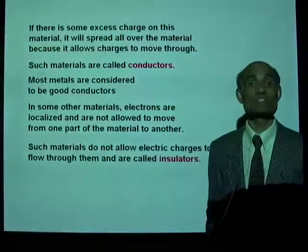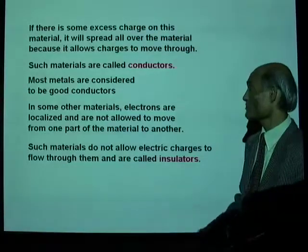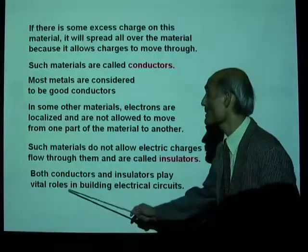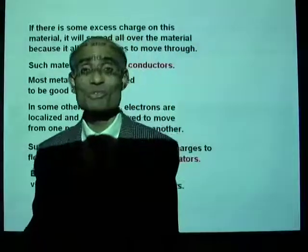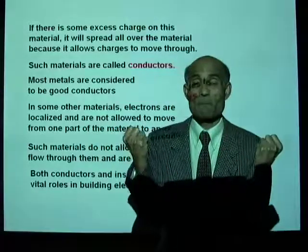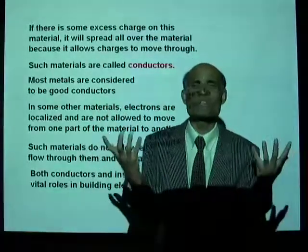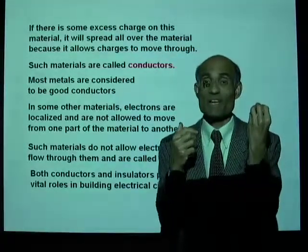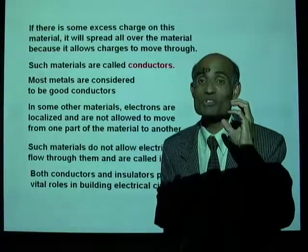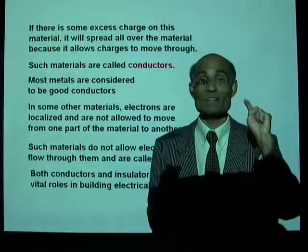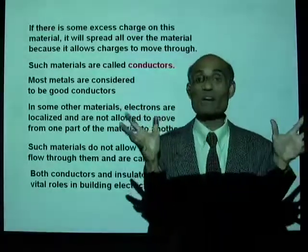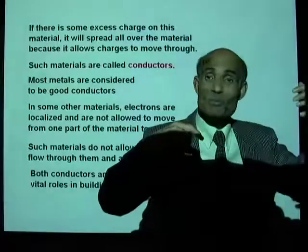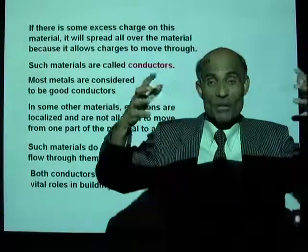Materials can be conductors or insulators. Insulators do not allow electric charges to flow through them. Both conductors and insulators play vital roles in building electrical circuits. When you use a cell phone, you are using a very sophisticated electrical circuit — and that is possible because there are conductors and insulators. If all materials were good conductors of electricity, you would never be able to build an electrical circuit.